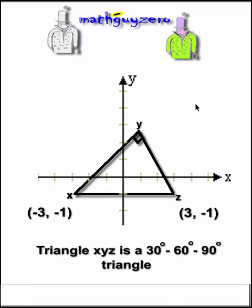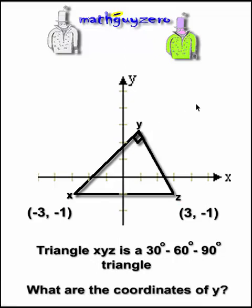I'm going to have to talk kind of fast. This is a long one. We have a 30, 60, 90 degree triangle. They give us two coordinates. We're supposed to find the third coordinate.